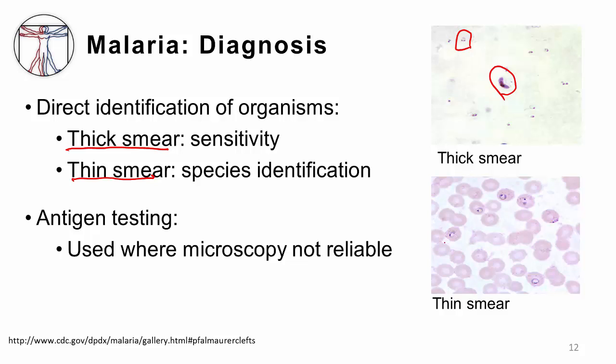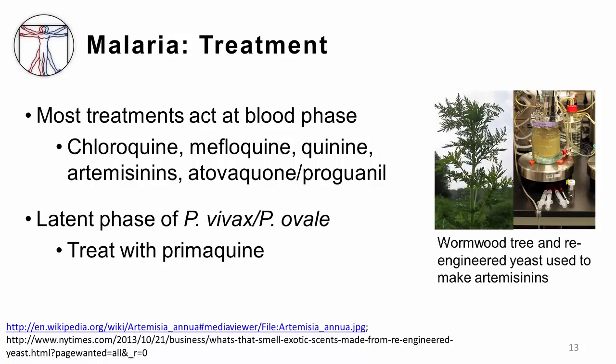There is antigen testing available where microscopy is not reliable and is used in some parts of the world. Most treatment is active against the blood phase, and a lot of the drugs that we use include chloroquine, mefloquine, quinine, the artemisinins, and atovaquone-proguanil. The artemisinins have really come out in several studies to be the most effective drug in terms of plasmodium falciparum infection, both in adults and children — very effective.